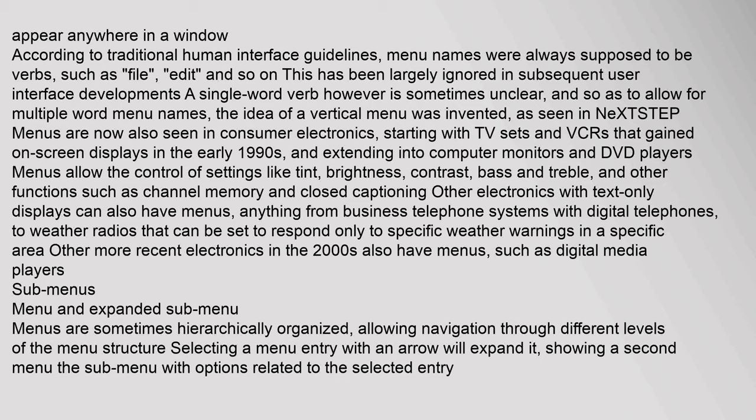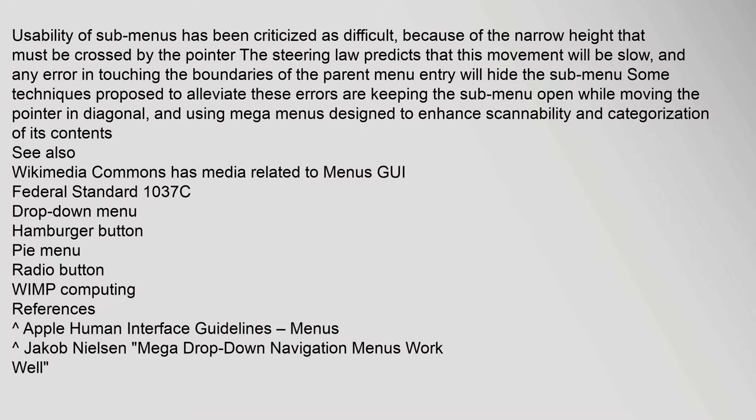Menus are sometimes hierarchically organized, allowing navigation through different levels of the menu structure. Selecting a menu entry with an arrow will expand it, showing a sub-menu with options related to the selected entry. The usability of sub-menus has been criticized as difficult because of the narrow height that must be crossed by the pointer. The steering law predicts that this movement will be slow and any error in touching the boundaries of the parent menu entry will hide the sub-menu. Some techniques proposed to alleviate these errors include keeping the sub-menu open while moving the pointer diagonally, and using mega menus designed to enhance scannability and categorization of contents.